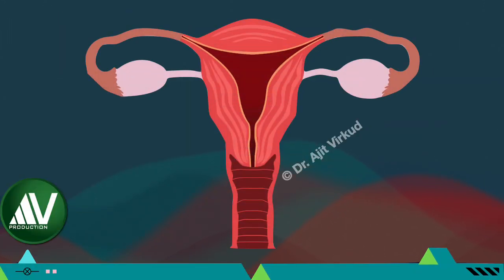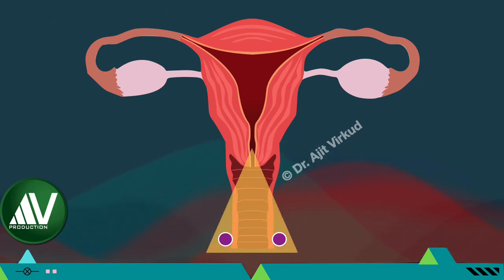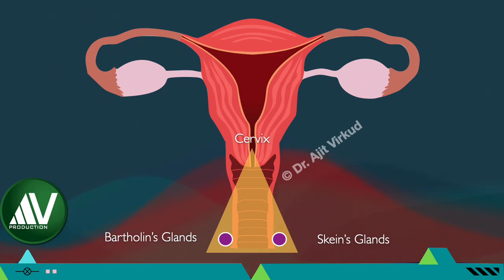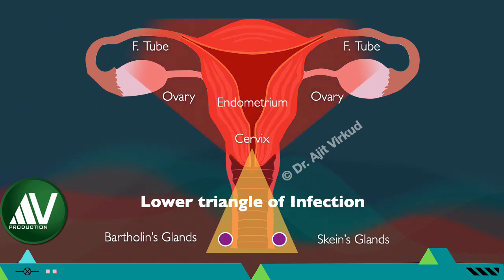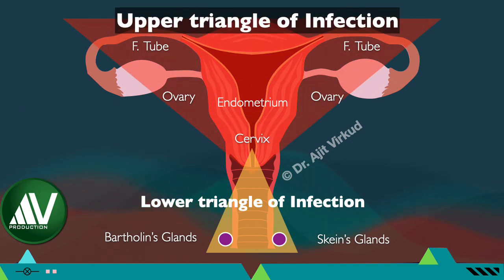Like respiratory tract infections, genital tract infections are also of two types. Lower genital tract infections include infection of the cervix, Bartholin's glands and Skeen's glands — this is known as the lower triangle of genital tract infection. Subclinical PID is common among women with lower genital tract infections. Upper genital tract infections include infections of the endometrium, fallopian tubes and ovaries, known as the upper triangle. Absence of infection of the lower genital tract does not exclude the diagnosis of pelvic inflammatory disease.